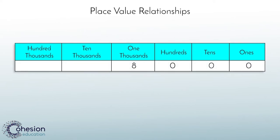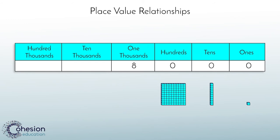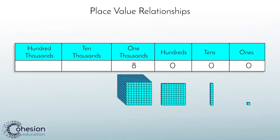When working with a place value chart, there are simple rules about moving from one place value to the next. Looking at this example, you have eight thousand in your thousands place. Knowing that the ones place has a value of one, the tens place is made up of ten ones, the hundreds place is made up of ten tens, and the thousands place is made up of ten one hundreds.